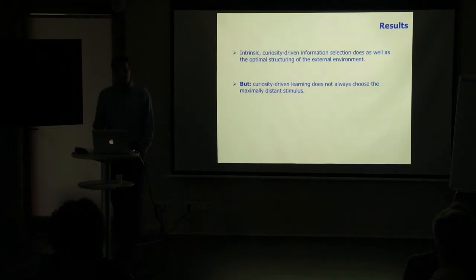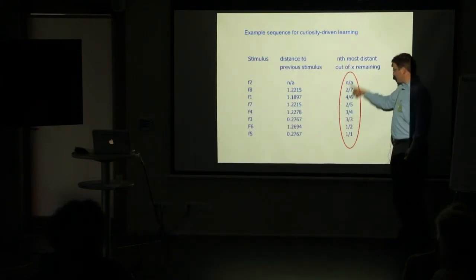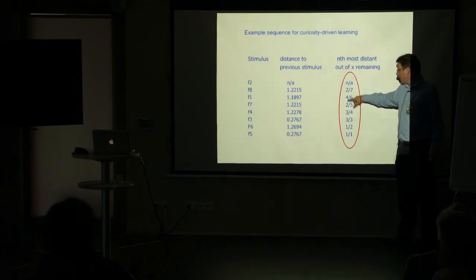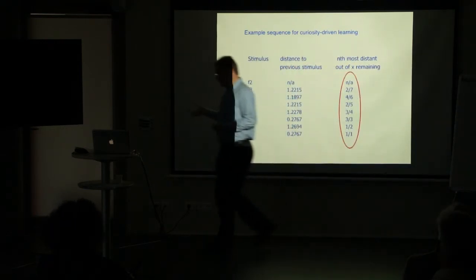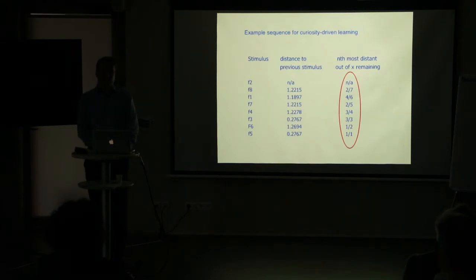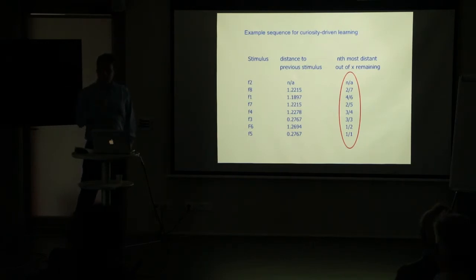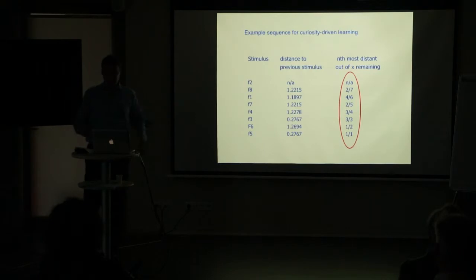Interestingly, curiosity-driven learning did not always choose the maximally distant stimulus. An example sequence showed the model switching between stimuli that are quite dissimilar and quite similar — for instance, choosing the second most dissimilar, then the fourth, then the second, then the third from remaining sets. So the model switches between dissimilar and similar stimuli and still performs as well as the maximum-distance model. This is very recent work done two days ago, and we will naturally explore further what drives these choices and how they make learning more effective.